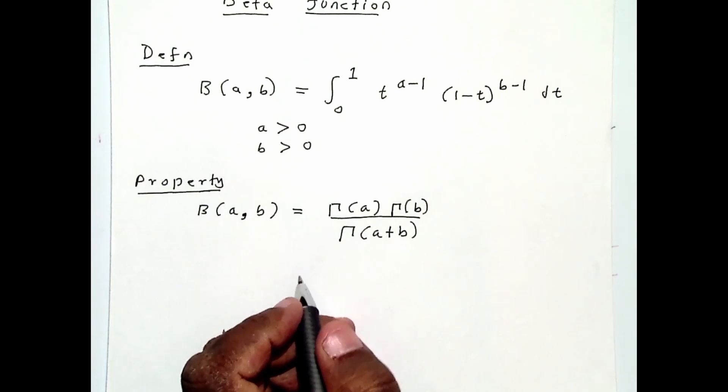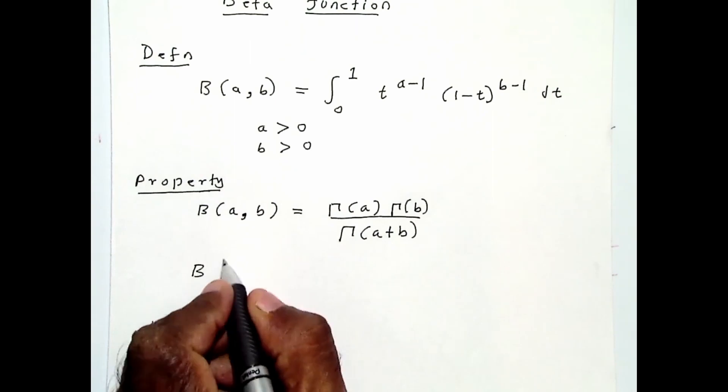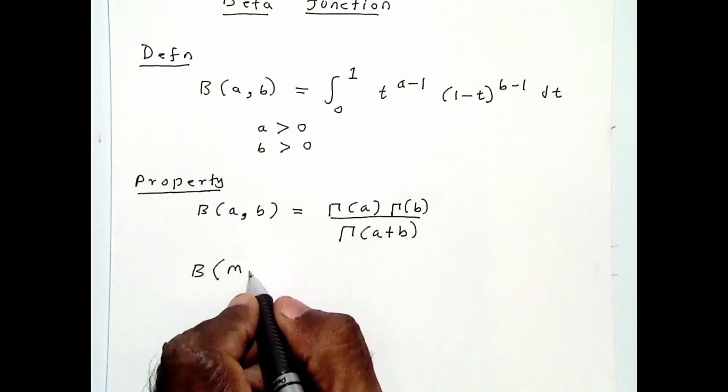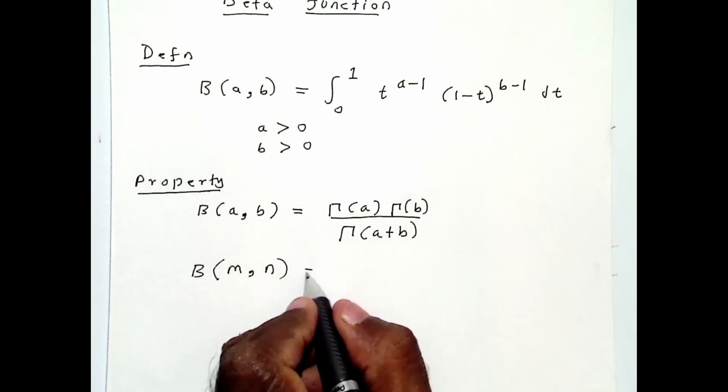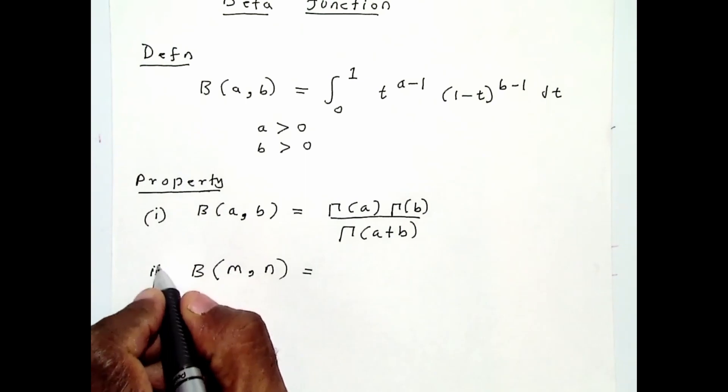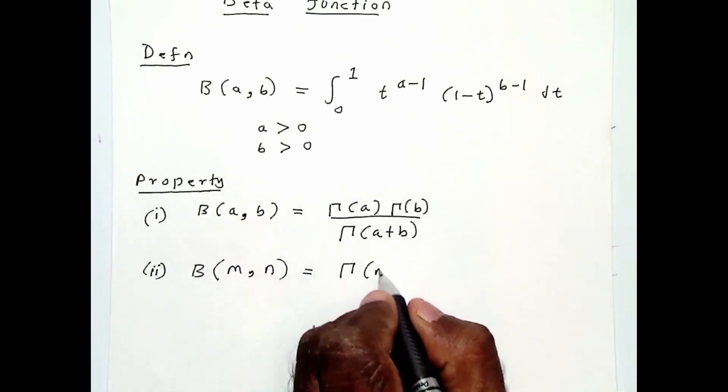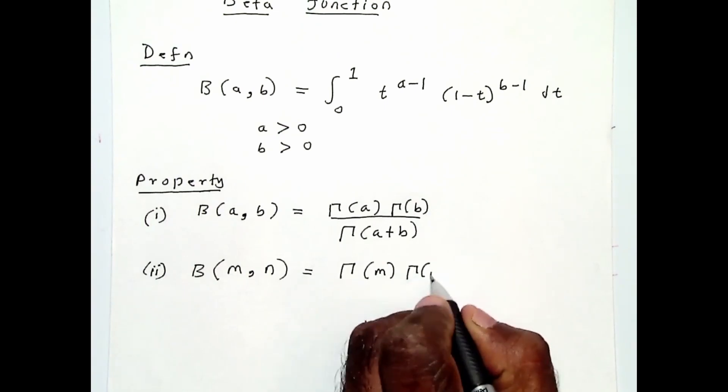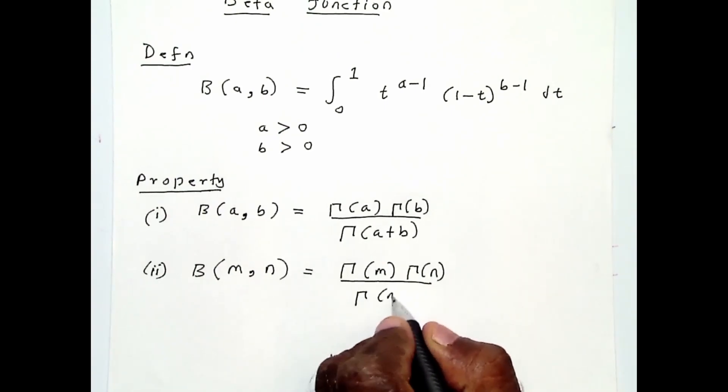For example, if m and n are positive integers, you can use the properties of the gamma function to simplify it, so it becomes B(m,n) = Γ(m)Γ(n)/Γ(m+n).